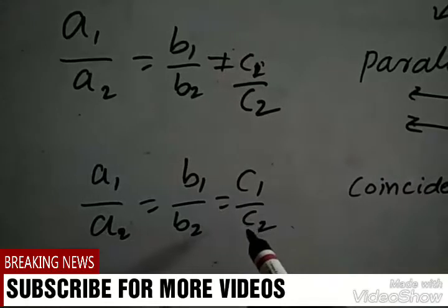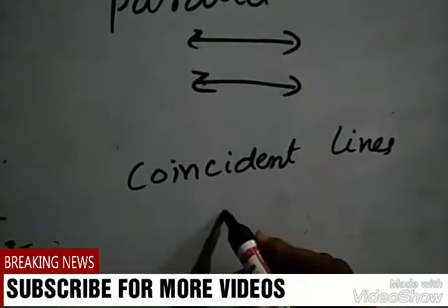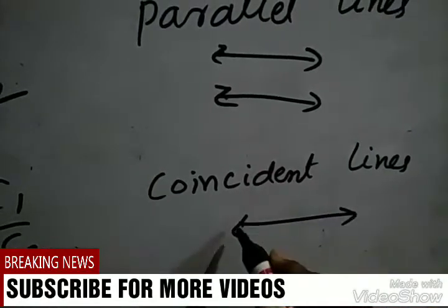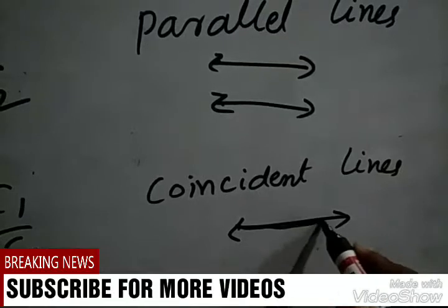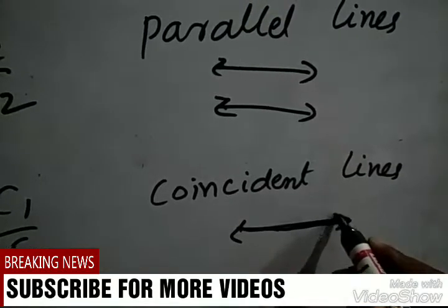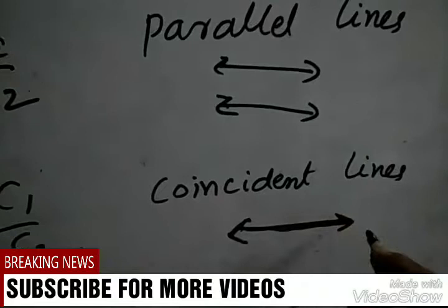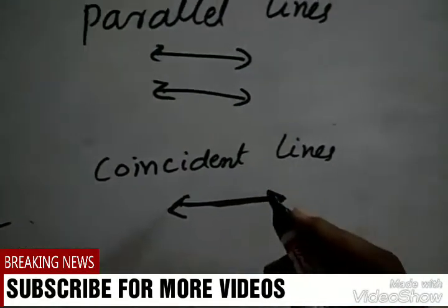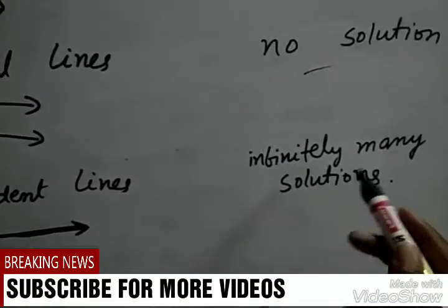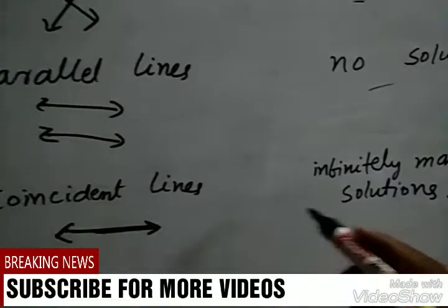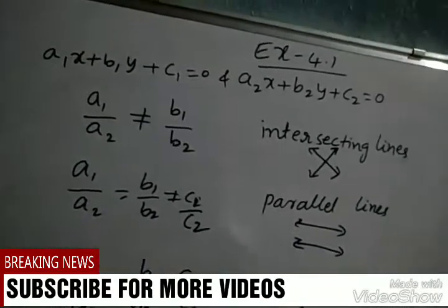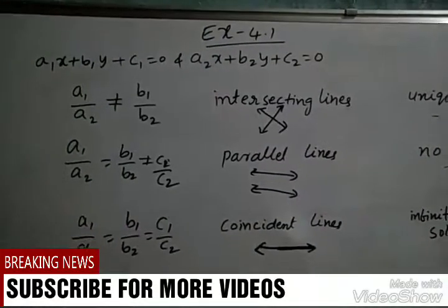The third condition is: if a1/a2 is equal to b1/b2 is equal to c1/c2, then they are coincident lines — meaning one line lies on top of another. In this situation, we get infinitely many solutions.